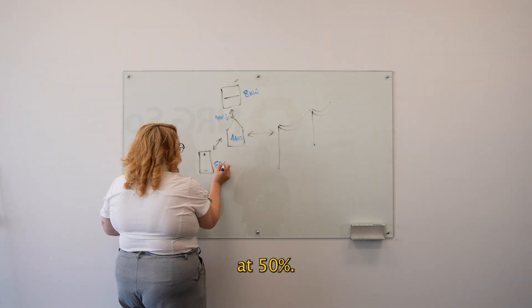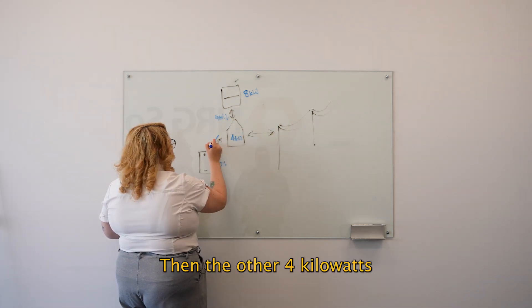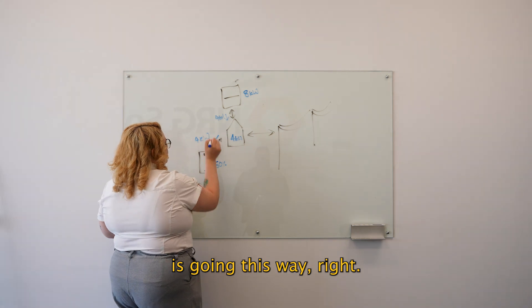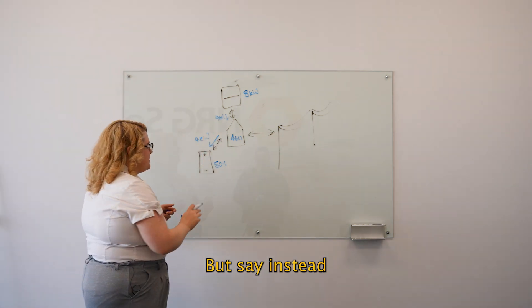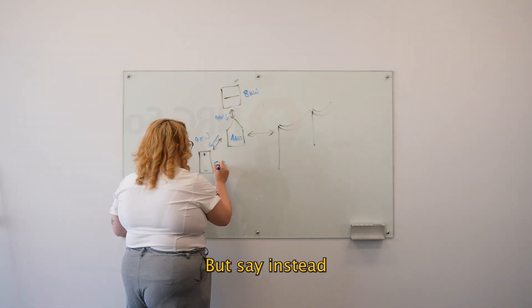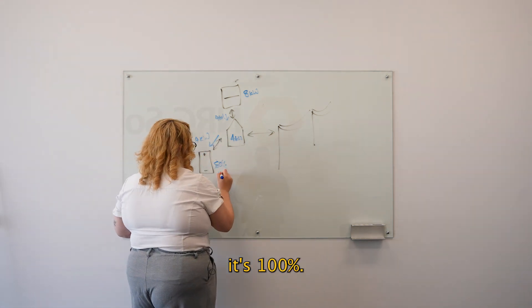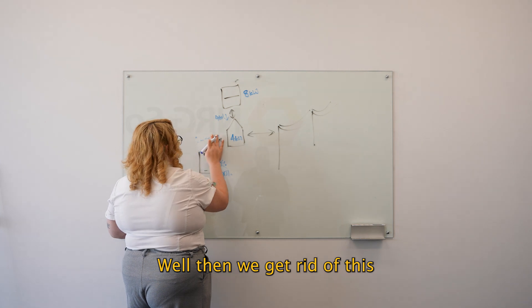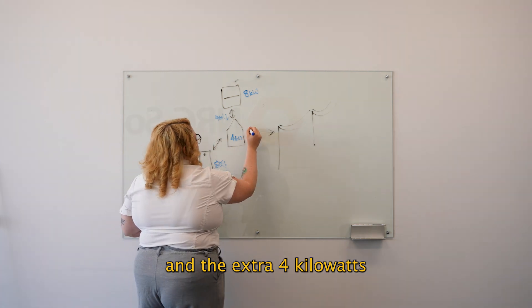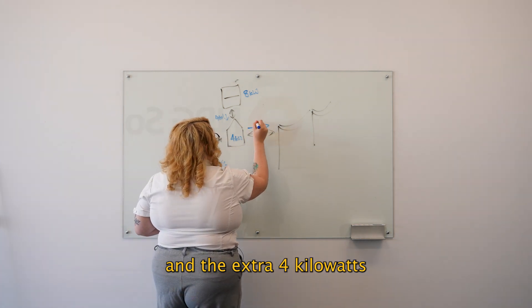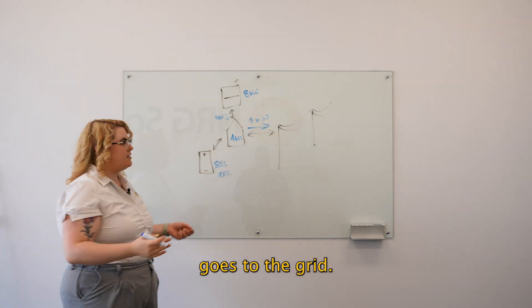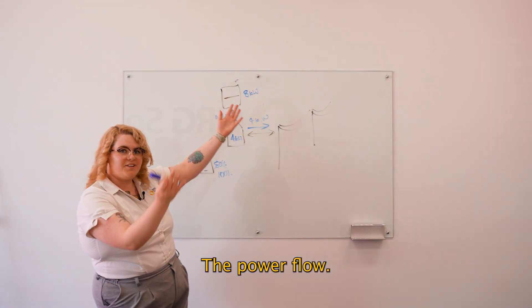In this scenario, say the battery's at 50 percent — the other 4 kilowatts goes that way. But say instead it's at 100 percent; well then we get rid of that path, and the extra 4 kilowatts goes to the grid.